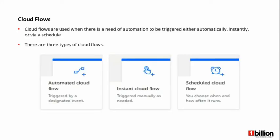First, we go with cloud flows. Cloud flows are basically designed to work with data in the cloud. Using cloud flows, we can create automated flows that use data in the cloud. According to how a flow is triggered, cloud flows can be further divided into three different subtypes: automated cloud flows, instant cloud flows, and scheduled cloud flows.